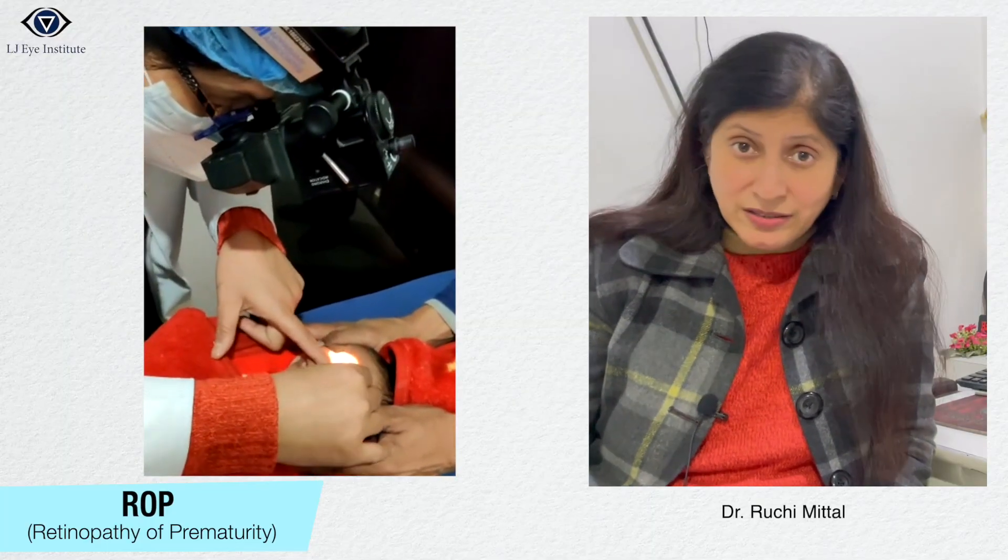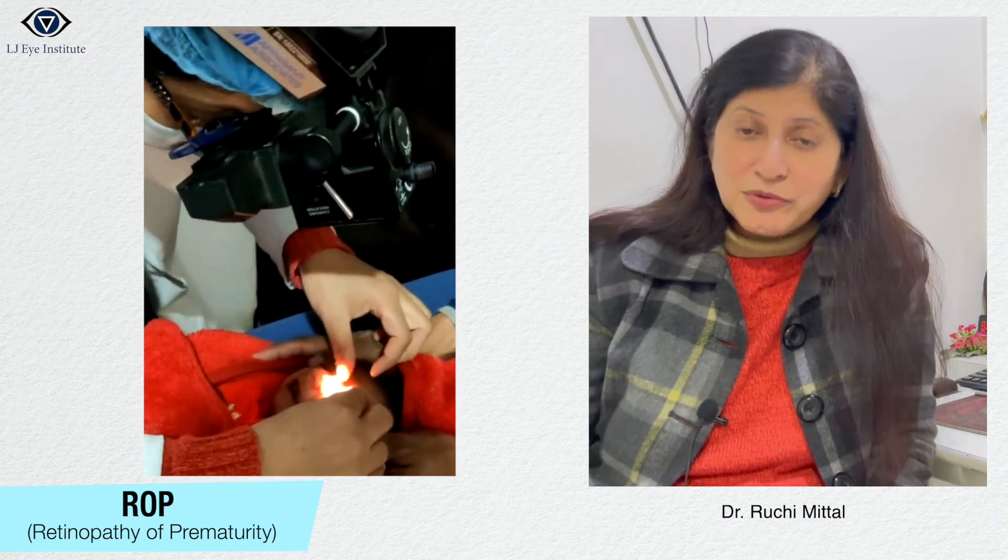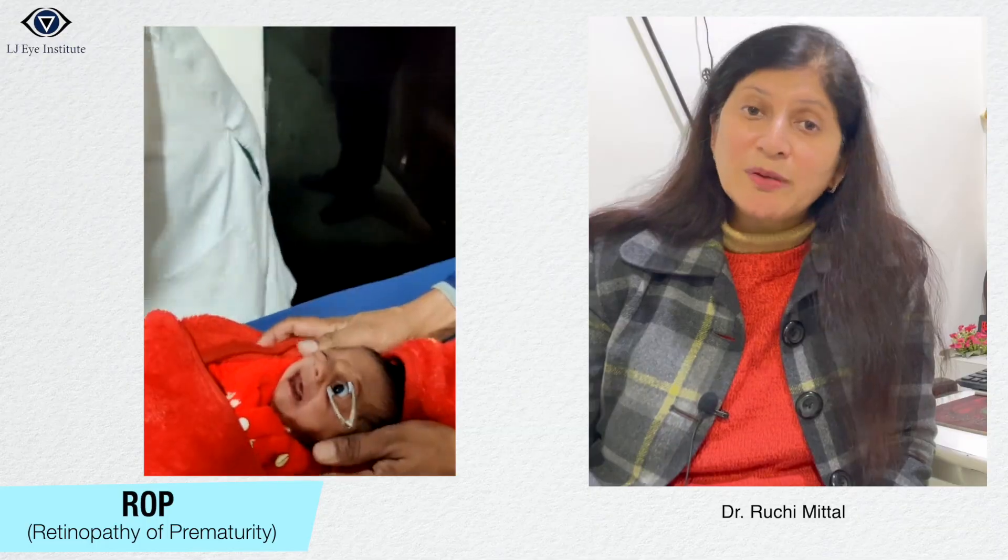Parents have to understand — the child is small and preterm, and sometimes they don't take it seriously. They don't go for screening thinking the child will get bigger first. By that time we may become late. So if your neonatologist tells you that your child is preterm and eye checkup is needed, we should not ignore it. We should go for screening and whatever treatment the doctor suggests. If we work hand in hand, we can help the child grow normally. A blind or disabled child is painful for the parents and for the child, so ROP should not be taken lightly. Thank you.